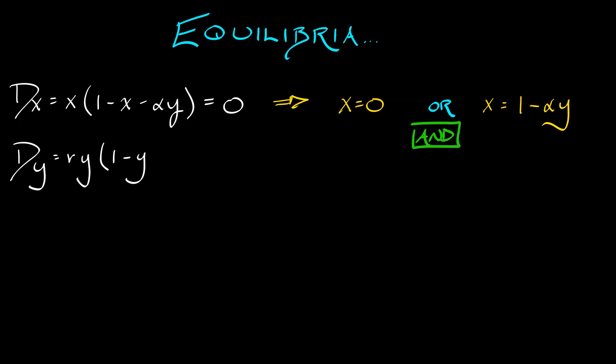Doing the same thing with the dynamics for Y gives us two solutions. Y equals 0, or Y equals 1 minus beta times X. Now we have two possible clauses with an and in between them. There are four possibilities for this. There are four equilibria in this system.